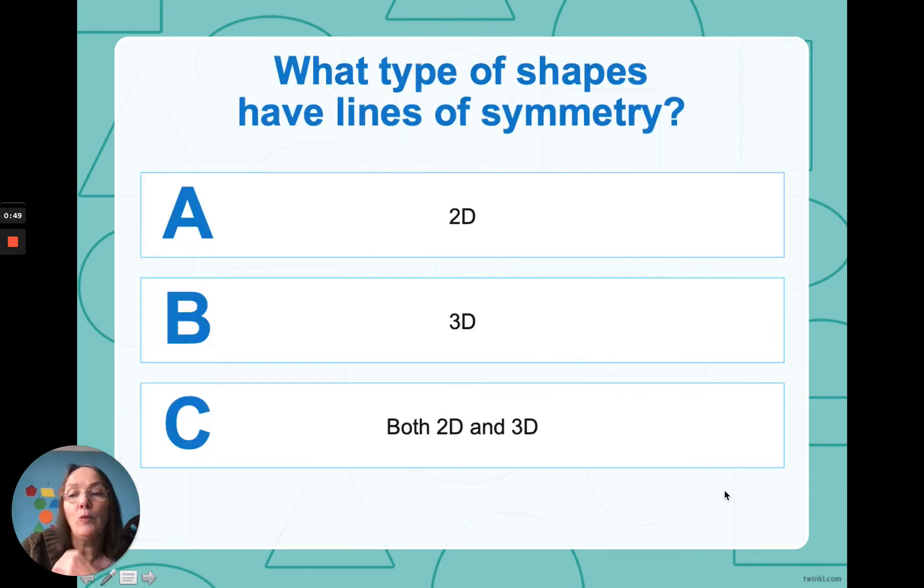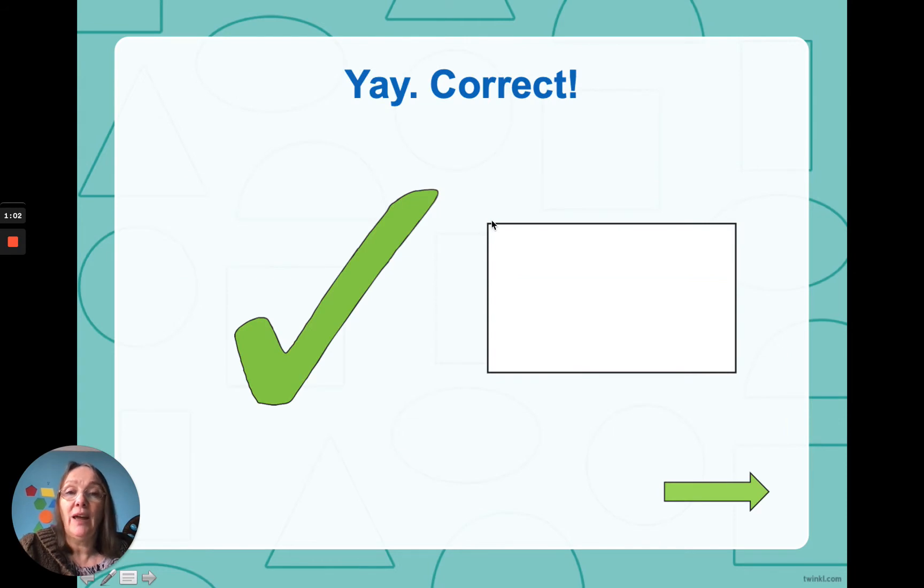Now, what type of shapes have lines of symmetry? Bit of a clue behind me. What I've been working with, we're working with 2D shapes. And what is a 2D shape? It is one that's got width and height, but it hasn't got any depth, because that would make it a 3D shape.